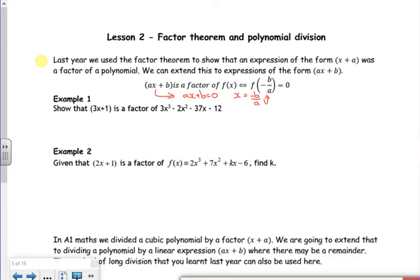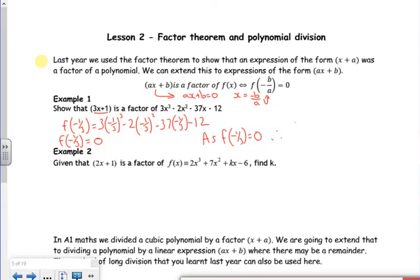But if it's equal to zero it means the y value is equal to zero and it's on the axes. So if I look at this I want to look at f of minus a third. So I'll put minus a third in. I've got 3 lots of minus a third cubed minus 2 lots of minus a third squared minus 37 lots of minus a third minus 12. If you work that out, you get zero out. We need to put a statement. So as f of minus a third is equal to zero, therefore 3x plus 1 is a factor. That's the first example.